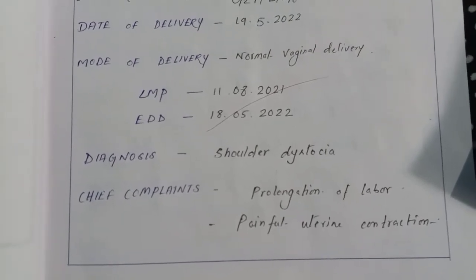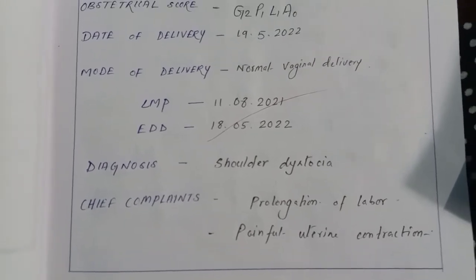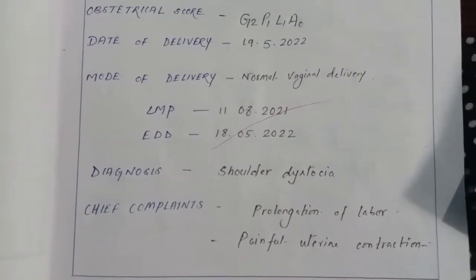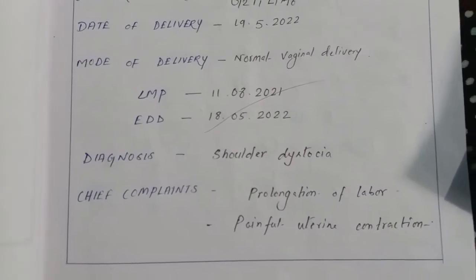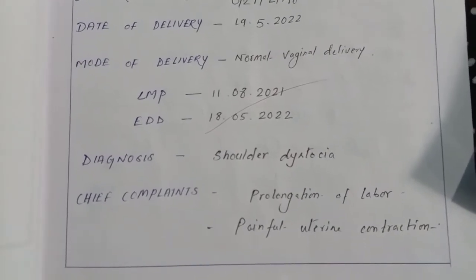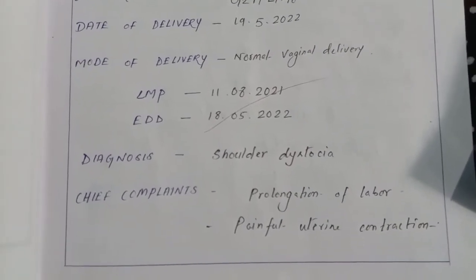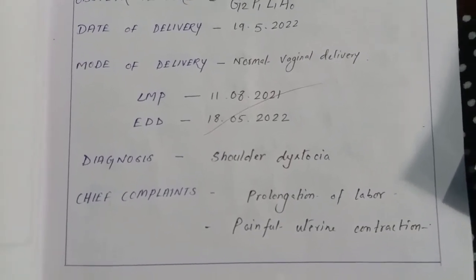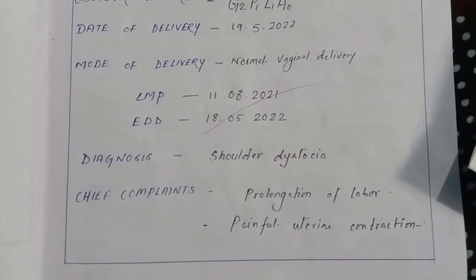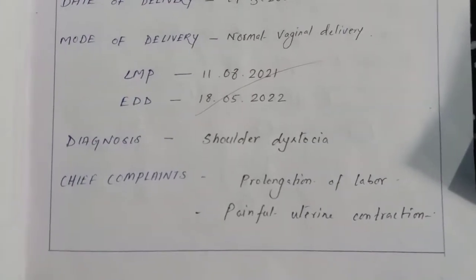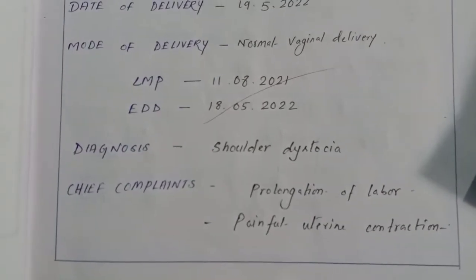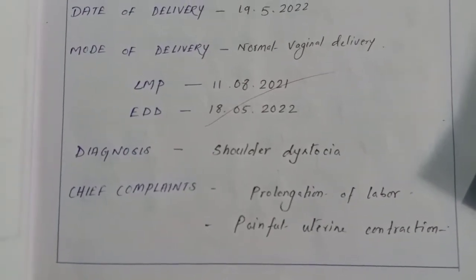Shoulder dystocia is an emergency medical condition during normal vaginal delivery where the head is delivered but the shoulder gets stuck into the pelvic brim and is not delivered.